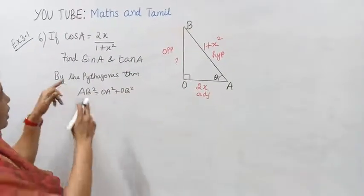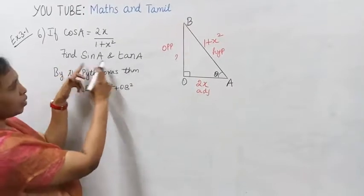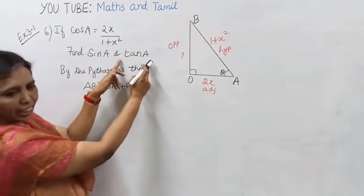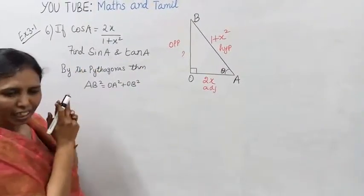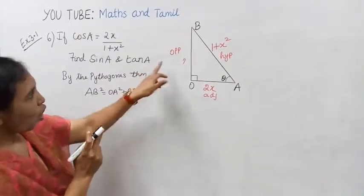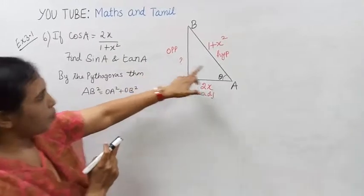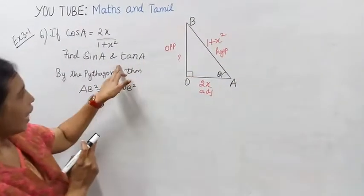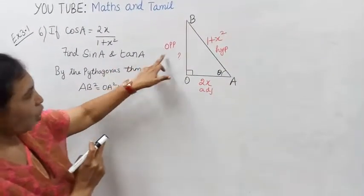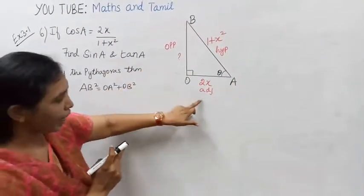In a right-angle triangle, sin A is opposite by hypotenuse, and tan A is opposite by adjacent.